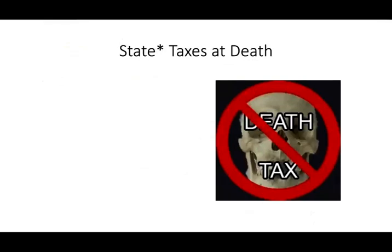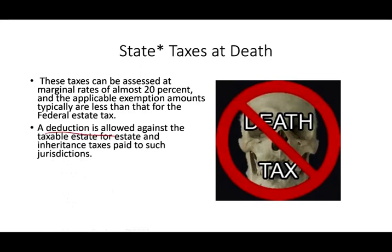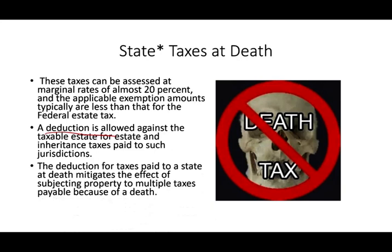Another deduction we can take is for state death taxes. Certain states and counties impose a death tax — not all states, which is why there's an asterisk — and these taxes can be assessed at a marginal rate of almost 20%. If you pay those state or county taxes, you are allowed a deduction against your taxable estate. This deduction, including inheritance taxes paid to a state, mitigates the effect of subjecting property to multiple taxes payable at death — you pay the taxes to the state, and you get a deduction to avoid being taxed twice.